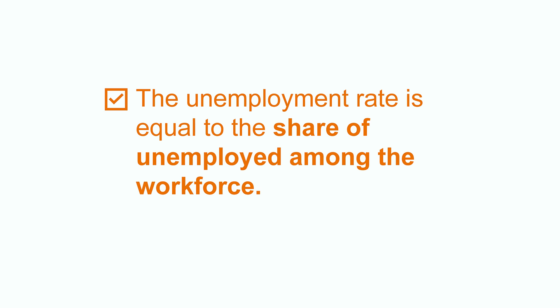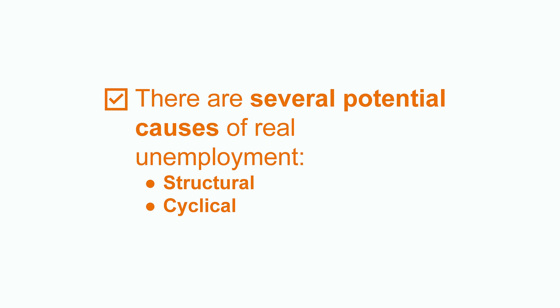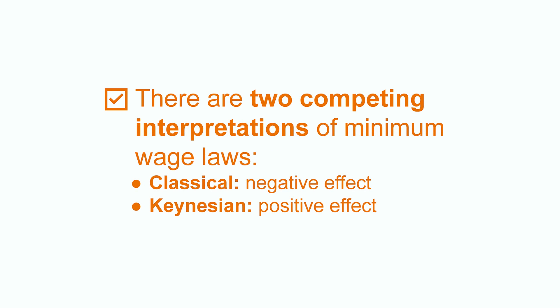A quick recap. We have seen that the unemployment rate equals the share of unemployed among the workforce. Unemployment can be natural or real. In the case of real unemployment, its causes can be structural or cyclical. Finally, we saw that there are competing interpretations of minimum wage laws: the classical interpretation states that they lead to negative effects, whereas the Keynesian interpretation states that they lead to positive effects.